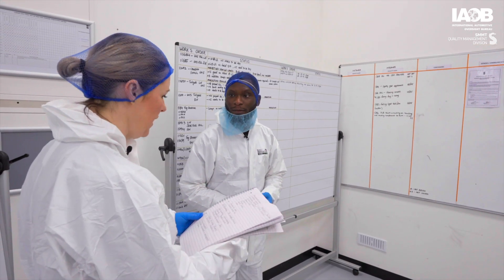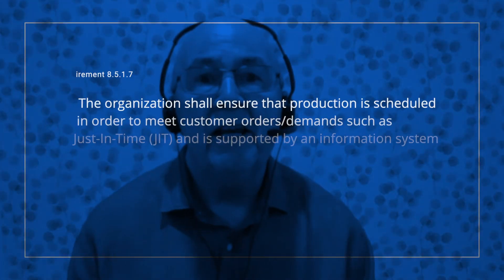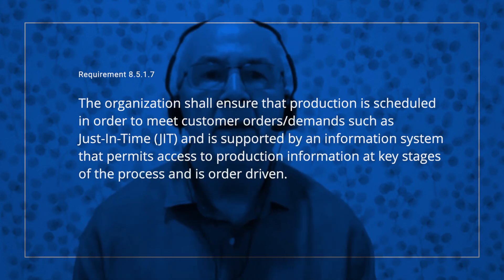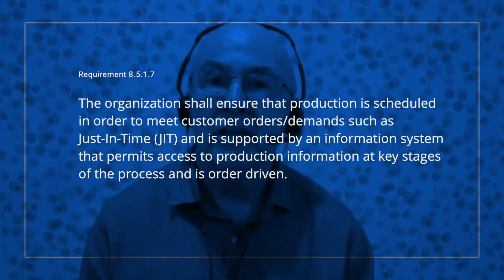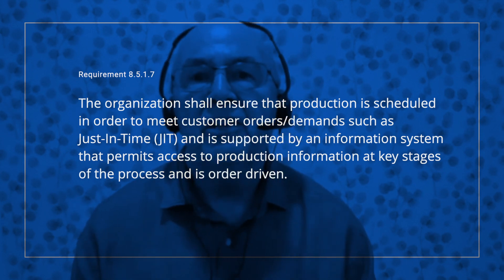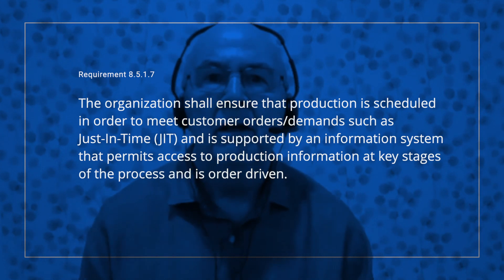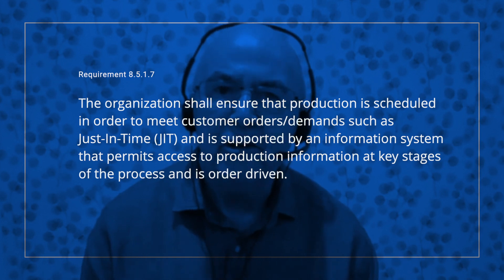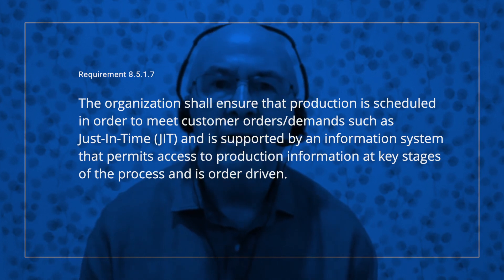Thank you for the explanation. So let's summarize. IATF 16949 requirement 8.5.1.7 production scheduling states that the organization shall ensure that production is scheduled in order to meet customer orders demand, such as just in time, and is supported by an information system that permits access to production information at key stages of the process and is order driven.